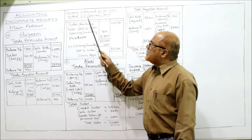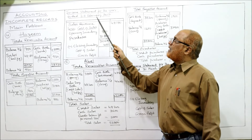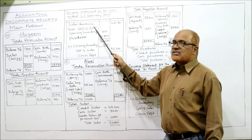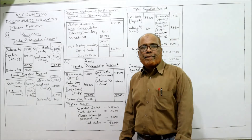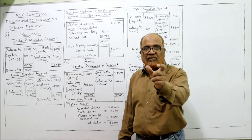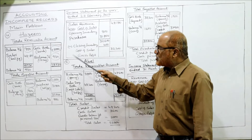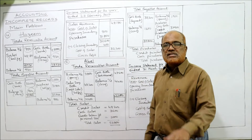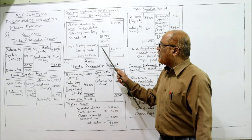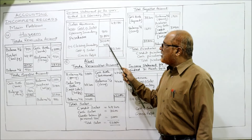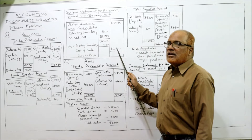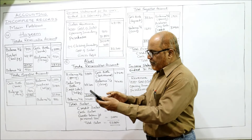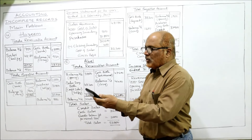Income statement for the year ended 28th February 2017: sales revenue 48,180. Less cost of sales — opening inventory 800 plus purchases 31,800 equals 32,600, minus closing inventory 400 equals cost of sales 32,200. Gross profit: 48,180 minus 32,200 equals 15,980.